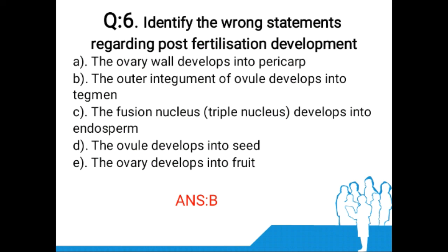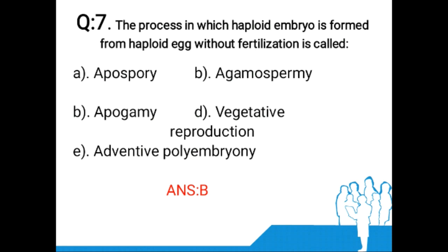Question number six: Identify the wrong statement regarding post-fertilization development. A: the ovary wall develops into pericarp, B: the outer integument of the ovule develops into tegument, C: the fusion nucleus (triple nucleus) develops into endosperm, D: the ovule develops into seed, E: the ovary develops into fruit. The answer is option B. The outer integument of the ovule develops into testa, and the inner integument of the ovule develops into tegmen.